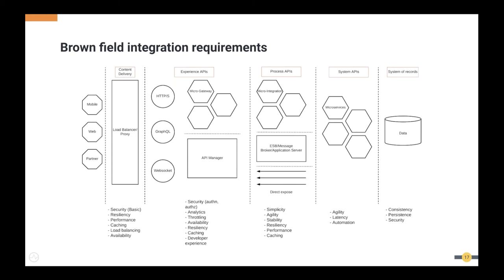At the process API level, different requirements apply — we need stability and better performance since this is where large amounts of data are accumulated and processed. At the system API level, the main concern is latency, because this is where data must be fetched quickly. Any latency here propagates through the layers and affects the client — a small latency in the system API can result in a much bigger latency on the client side.